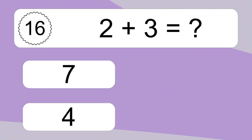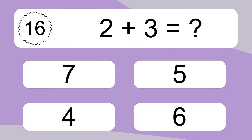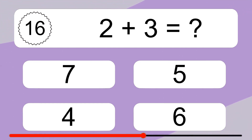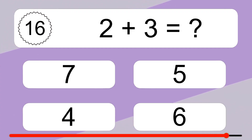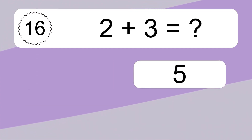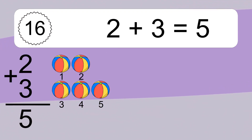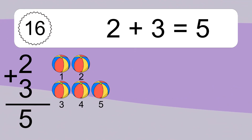2 plus 3 equals what? 2 plus 3 equals 5. Let's count it. 1, 2, 3, 4, 5.